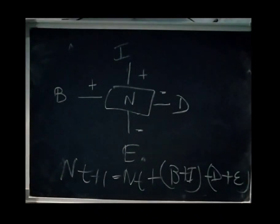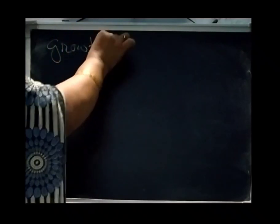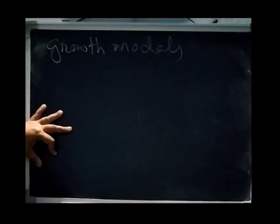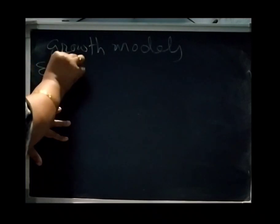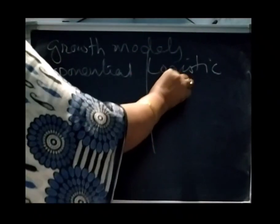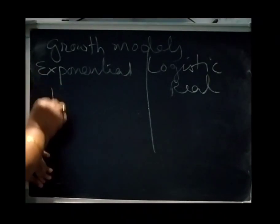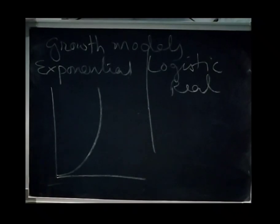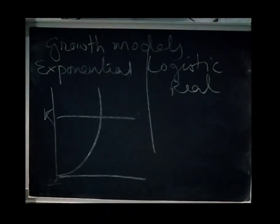Now we come to growth models. There are two growth models: exponential growth and logistic growth. In exponential growth, you can see a J-shaped curve showing how population rises. The carrying capacity is K, and the formula is dN/dt = rN.